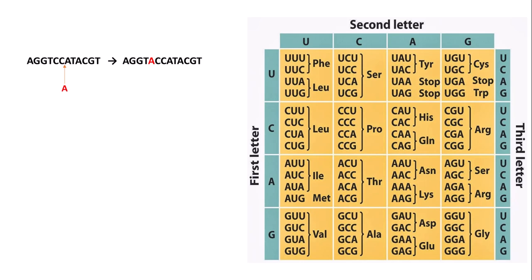On the genetic code we can see our insertion mutation. Upstream of where the mutation has occurred the amino acid sequence doesn't change — we have TGG and AGG which both encode arginine. However, here we have TCC and TAC caused by the insertion: TCC encodes serine and TAC encodes tyrosine. Before the mutation we have ATA which encodes isoleucine, but CAT as a result of our frame shift encodes histidine. CGT and other downstream codons also encode different amino acids, so there's a significant effect on the amino acid sequence.